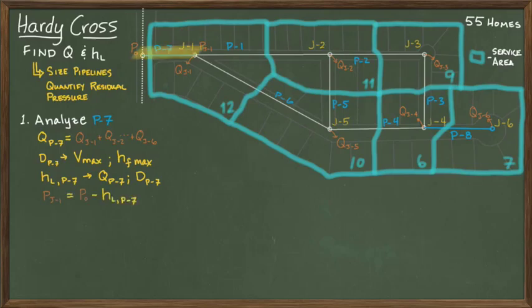When you do this analysis in practice, the agency operating the system typically provides you with the initial pressure, P-naught, where you connect to the system. So the pressure at junction one is simply the initial pressure at P-naught minus the head loss in pipe seven.